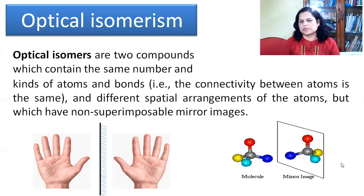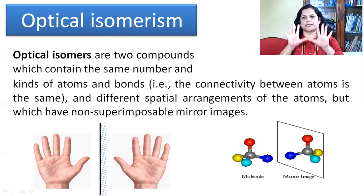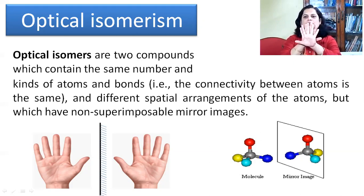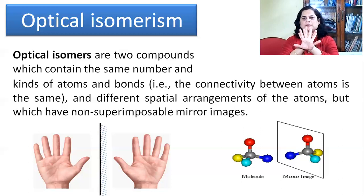The two important points about optical isomers: they show different spatial arrangements of atoms, and they have non-superimposable mirror images. To understand non-superimposable mirror images, consider the right hand and left hand. These two are mirror images of each other, but when we place them on top of each other, we get different images — they do not match. These are non-superimposable mirror images of each other.